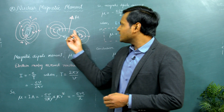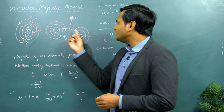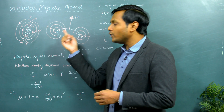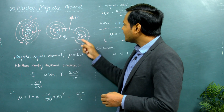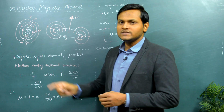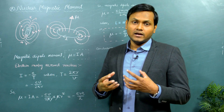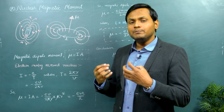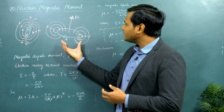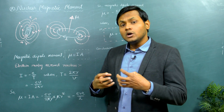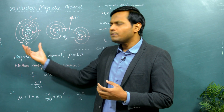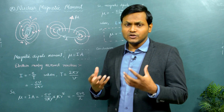Now if you have a circular current loop in which there is a current I flowing through it, then there are going to be magnetic field lines around that particular circular current loop, and because of these magnetic field lines, from far away this kind of a physical object will also behave like a tiny bar magnet of its own.